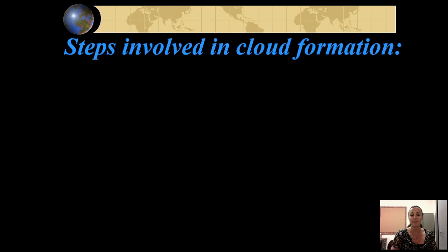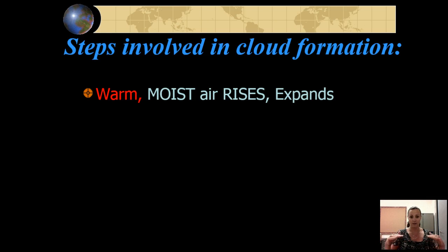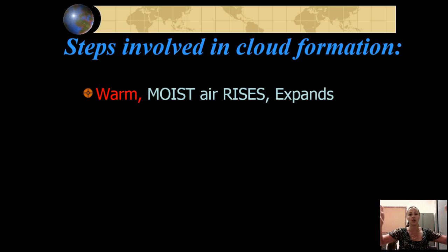There are a series of steps involved in cloud formation that you must memorize, and we're going to remember them as the four C's. First, we have warm moist air — that comes from trees, plants, oceans, and lakes evaporating. That warm moist air is less dense and so it will rise. As it rises, there's less air pressure, so it expands. So the first step of cloud formation is actually a W: warm moist air rises and expands.